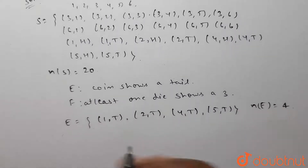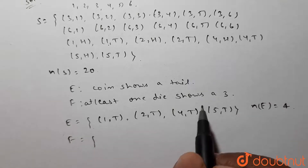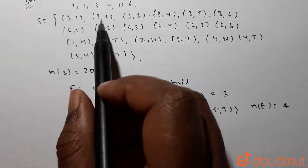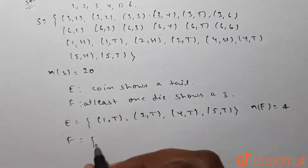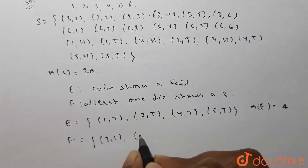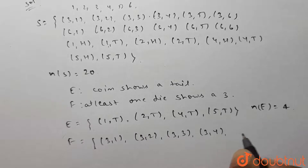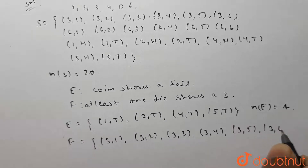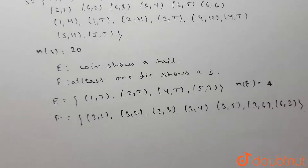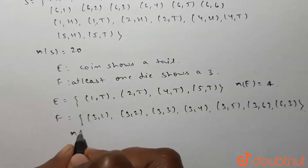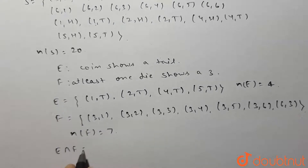Event F contains elements where at least one die shows a three. So F contains: (3,1), (3,2), (3,3), (3,4), (3,5), (3,6), and (6,3). These are the elements in event F, and the number of elements in event F is seven.